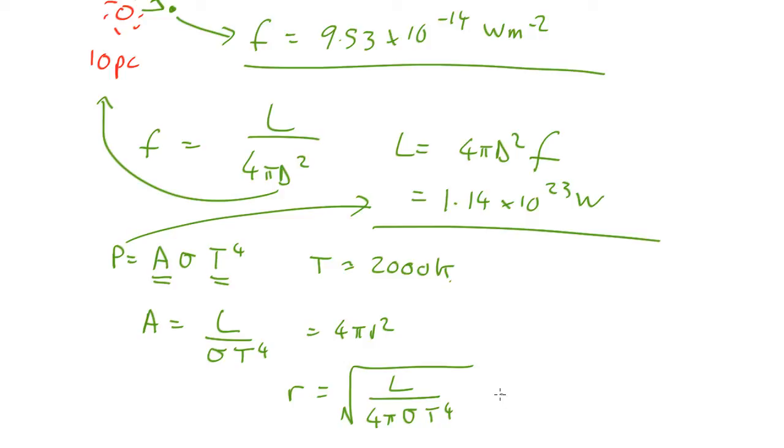And if we plug in numbers, that comes out as a radius of 10 to the 8 metres, so a little bit bigger than Jupiter. Notice that if we assume a different temperature, we could have got a very different answer. So unless we know the temperature accurately, it's very hard to get a good handle on the size of a planet from imaging.